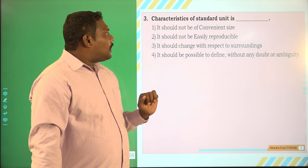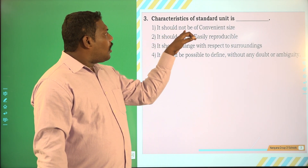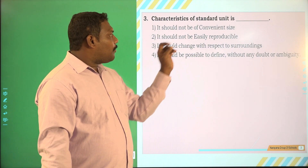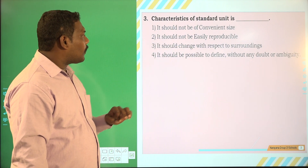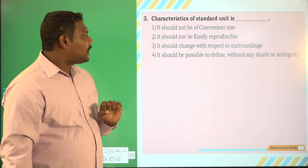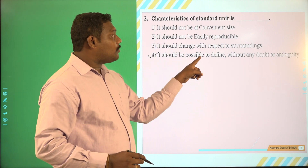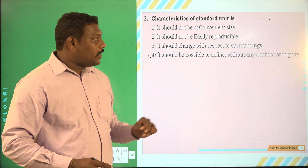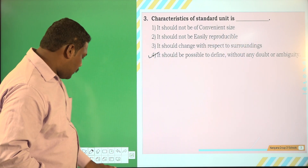Next, the other characteristics of standard unit: it should not be of convenient size — No. It should be easily reproducible — Yes. It should change with respect to surroundings — No, it should not change. The fourth option: it should be possible to define without any doubt of ambiguity — Yes, so it should be able to be defined without any doubt of ambiguity.